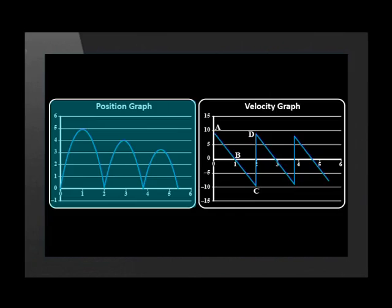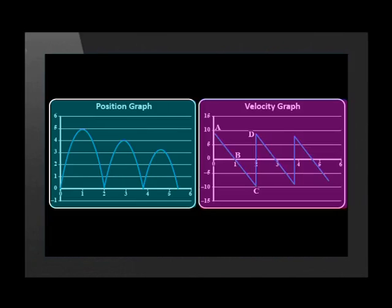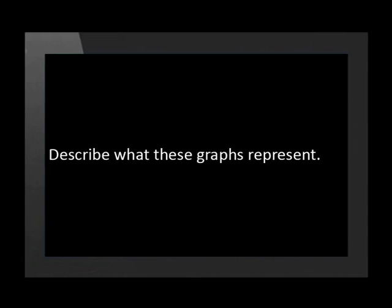This is a position-time graph and this is a velocity-time graph. They are for the same motion. Now first, describe what these graphs represent.